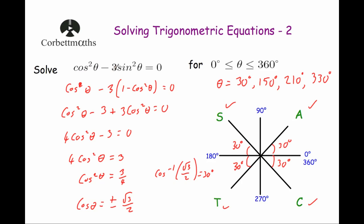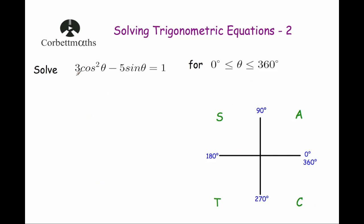Our last example: solve 3 cos squared θ minus 5 sine θ equals 1. We know that cos squared θ equals 1 minus sine squared θ. We replace cos squared θ with 1 minus sine squared θ, writing 3 bracket 1 minus sine squared θ close bracket minus 5 sine θ equals 1.